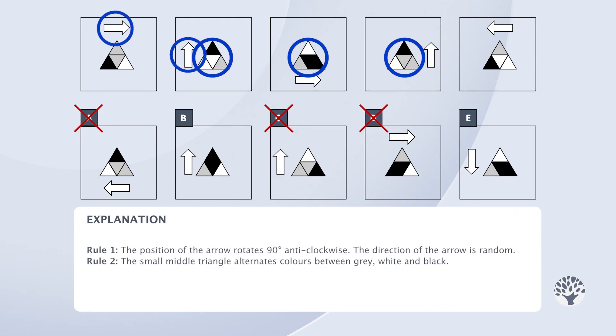However, in frame 3, it points anticlockwise. We can therefore deduce that if the arrow points clockwise, the small outer triangles will rotate clockwise in the next frame.